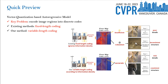In this paper, we focus on the popular VQ-based autoregressive models with key problems like encoding image regions into discrete codes. Existing methods all adopt fixed-length coding that encodes fixed-size image regions into fixed-length codes, which is insufficient in important regions or redundant in unimportant ones. We propose variable-length coding that encodes image regions according to their different information densities to achieve an accurate and compact code representation.